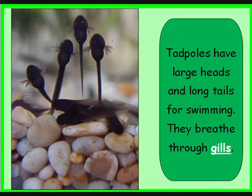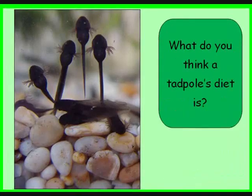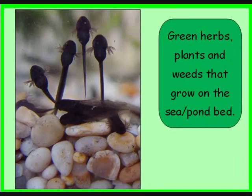Tadpoles have large heads and long tails for swimming, and they breathe through their gills, kind of like a fish. What do you think a tadpole's diet is? It's green herbs, plants, and weeds that grow on the sea and pond bed.